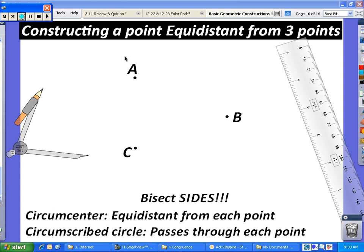In this video we're going to be talking about constructing a point that is equidistant from three points, otherwise known as a circumscribed circle. We're looking for the circumcenter, which is basically equidistant from each point that you're given.